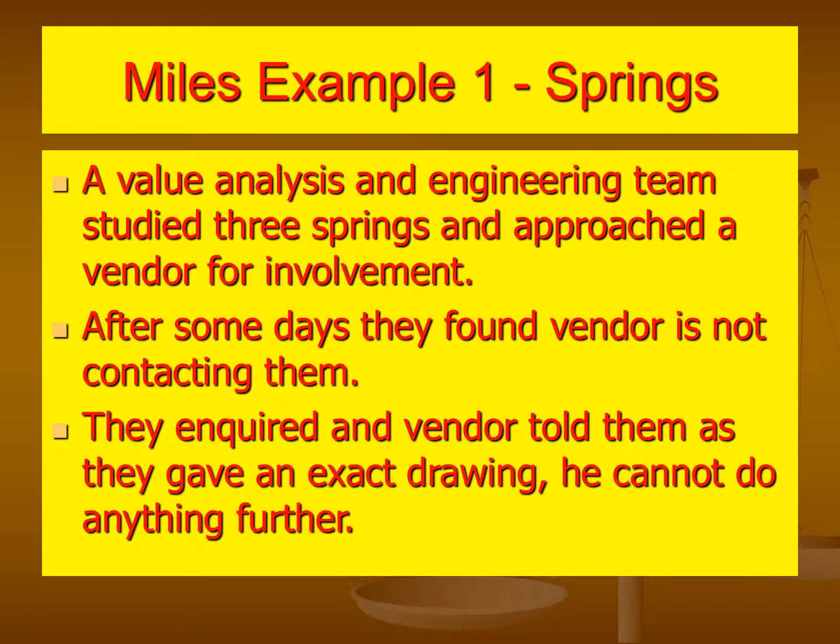Example 1 — Regarding springs: A value analysis and engineering team studied three springs and approached a vendor for involvement. After some days they found the vendor had not contacted them. They enquired and the vendor told them that since an exact drawing was given, he could not do anything further because the engineer who made the drawing might get offended. The value engineering team then spoke to the design engineer and facilitated a conversation with the supplier, who then proceeded with the design activity and provided quotations that gave benefit to the company.